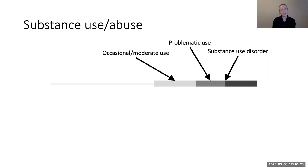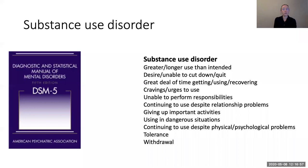Depending on the substance and the legal context, occasional moderate use might be okay, but there comes a point where use becomes problematic. We can define a threshold for clinically significant substance use disorder, typically defined by quantity of use and how much distress it's causing or how much it's affecting functioning. People with a substance use disorder use a lot and frequently — so much that it gets in the way of doing other important things. They want to cut down but are unable to do so. They keep using even though it's causing physical or psychological problems, and they experience evidence of physical addiction: tolerance or withdrawal when they stop.